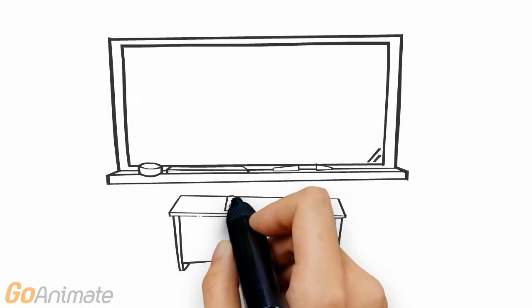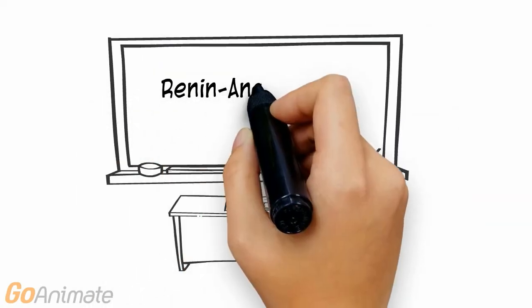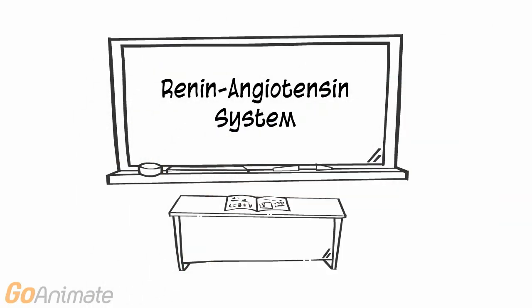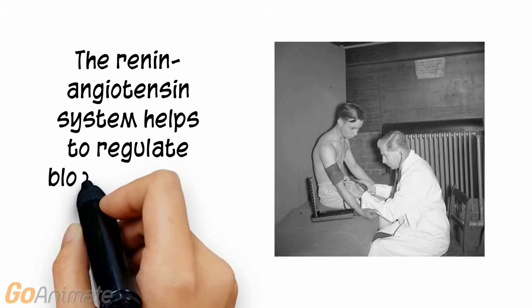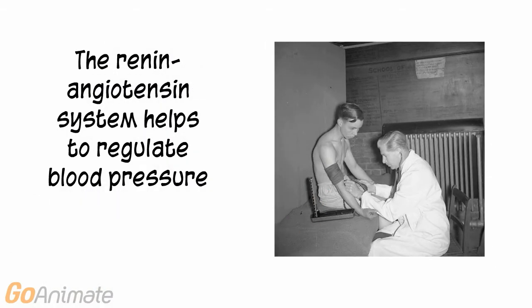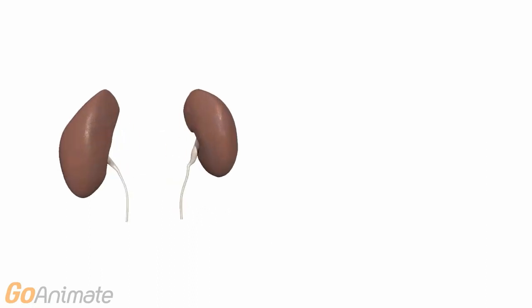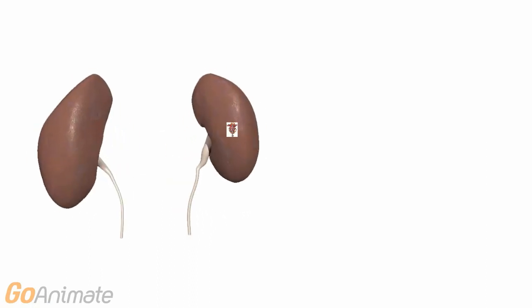Let's learn about the renin-angiotensin system. The renin-angiotensin system helps to regulate blood pressure. It all begins in the kidneys.